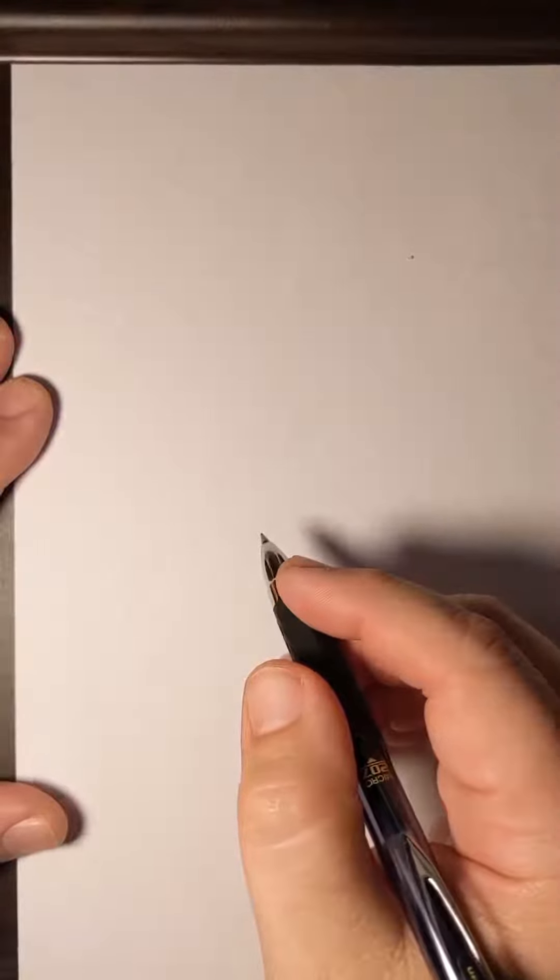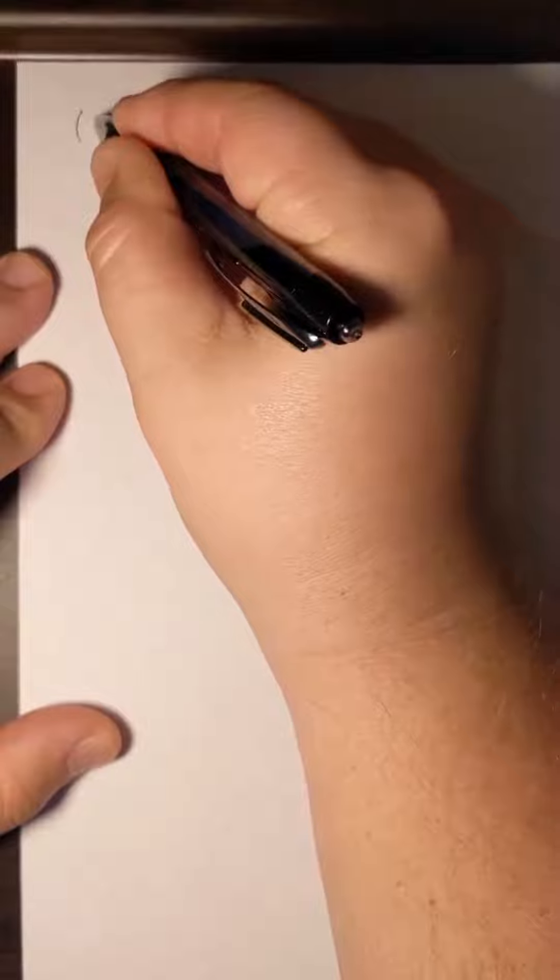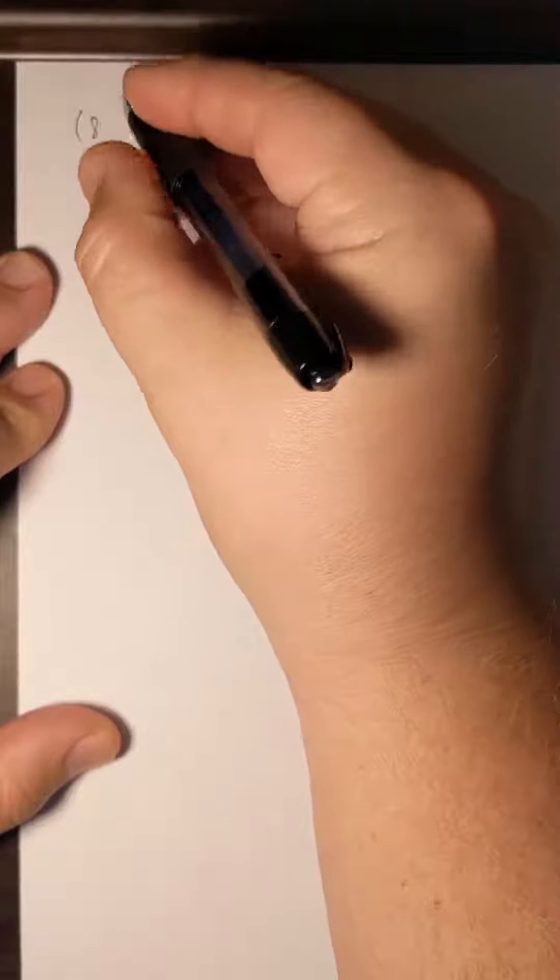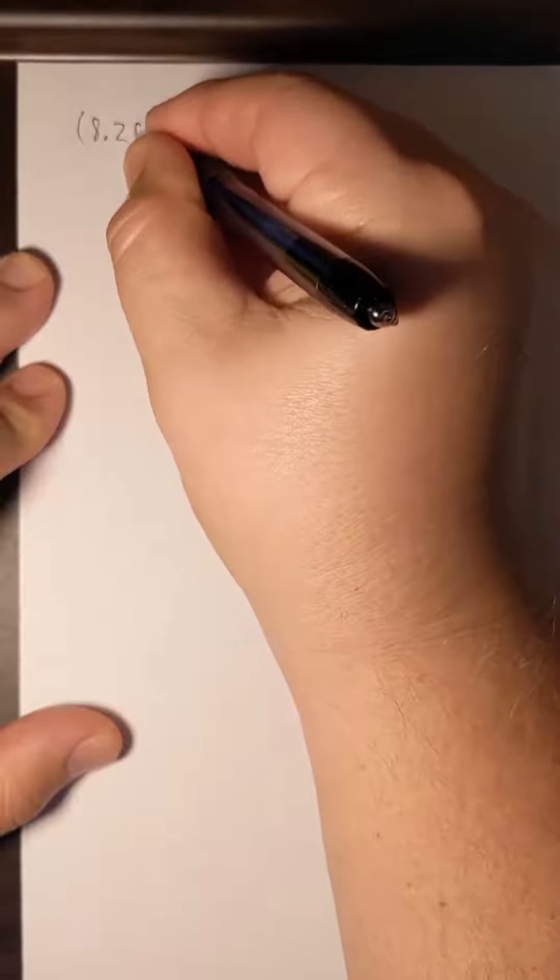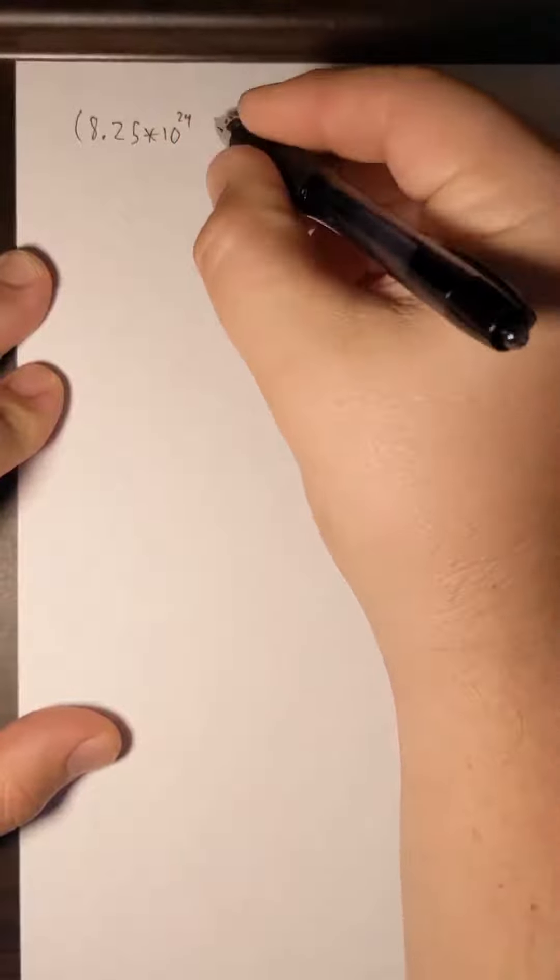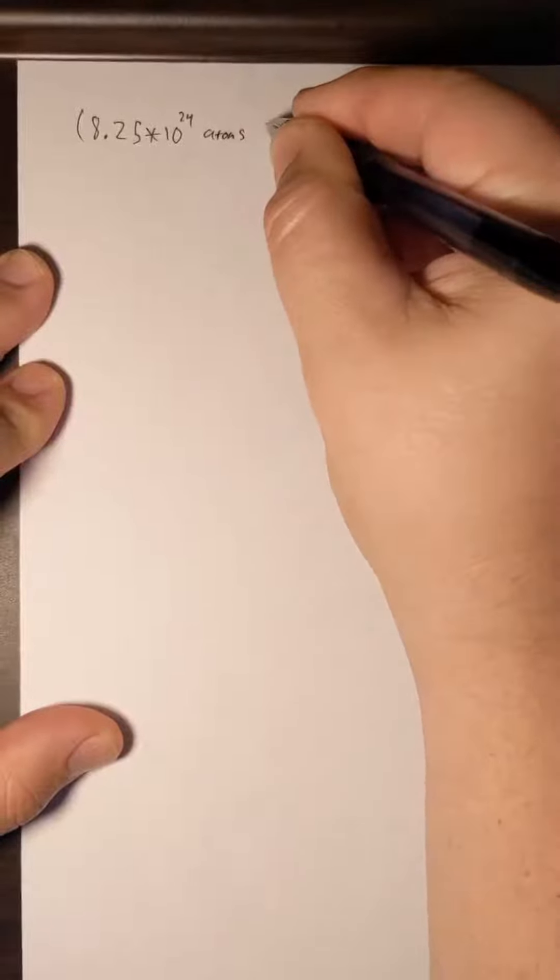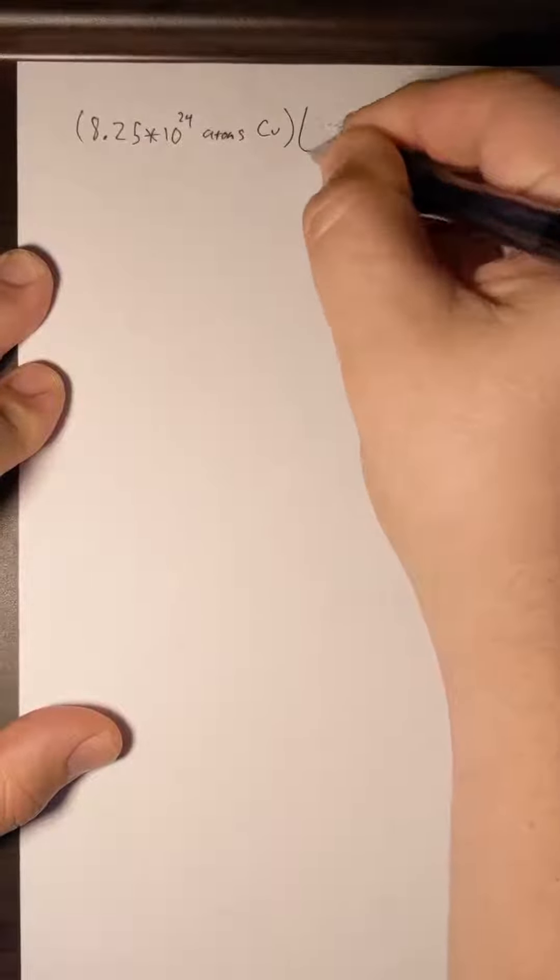In this question we want to know how many moles we would have if we had 8.25 times 10 to the 24th atoms of copper. And so we'll write down our number of atoms that we have, 8.25 times 10 to the 24th atoms of copper.